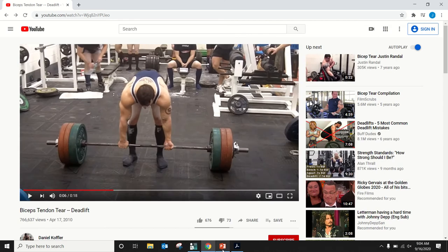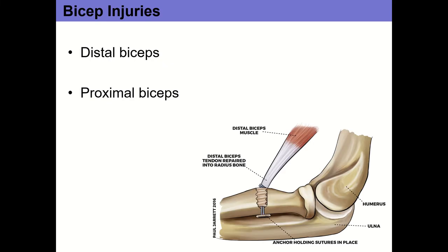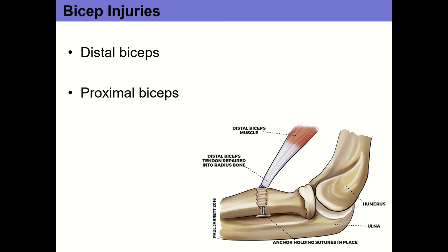Biceps pops off its insertion at the tuberosity of the radius and rolls up on itself. That type of injury is fairly common in strength sports — powerlifting deadlifts and strongman events like stone lifting, where they simultaneously flex the elbow and shoulder. Surgically, they thread through the tendon, drill a hole through the radius, and anchor it with a plug so it's securely fixed.